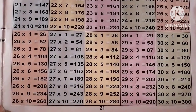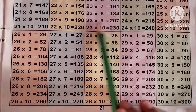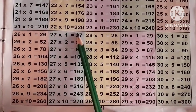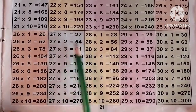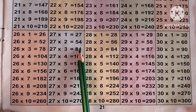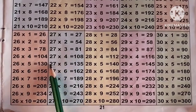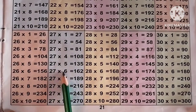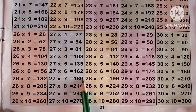Now the table of 27: 27 ones are 27, 27 2s are 54, 27 3s are 81, 27 4s are 108, 27 5s are 135, 27 6s are 162, 27 7s are 189.